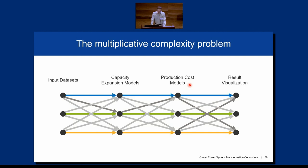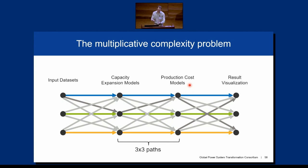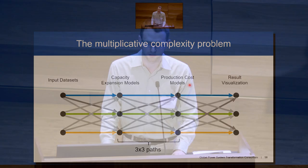With this sort of point-to-point architecture we have this multiplicative problem. If you have three capacity expansion models and three production cost models and you write a translator from one tool's input to one tool's output, you end up with nine different potential translators that you could need to write. Even though you in theory have this set of open source tools, it's really not an open ecosystem where you can actually use them in a modular fashion and interchange data between them — and actually use them in the way that is the point of open source software, which is not having to reinvent all these wheels.